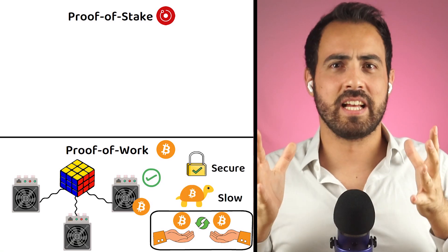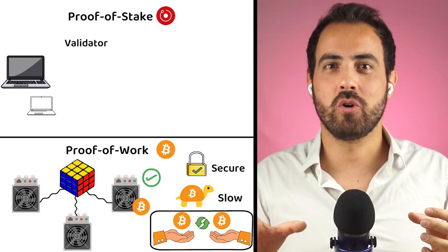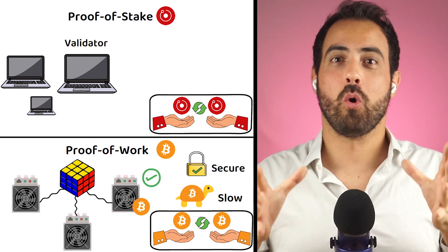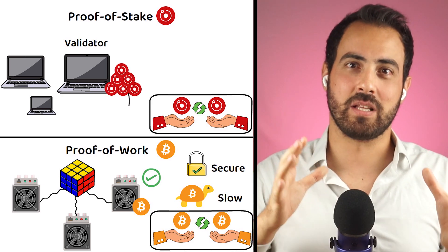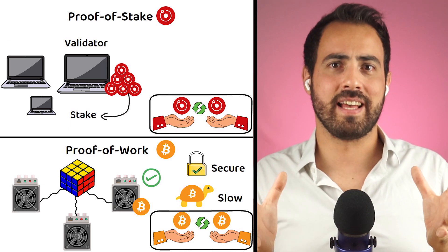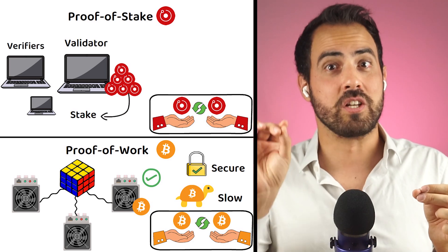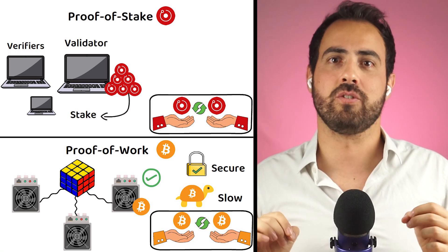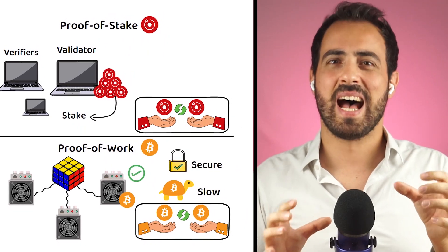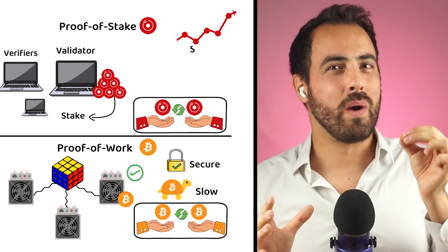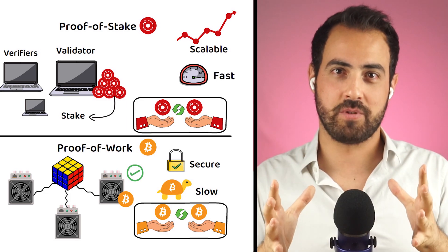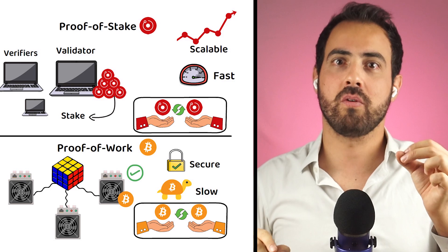Proof-of-stake networks, on the other hand, select validators semi-randomly to verify transactions based on how much they have staked — meaning deposited — to the network. It then semi-randomly selects a few verifiers to ensure the accuracy of the validator. The consequences are that proof-of-stake projects are much more scalable, quicker to confirm transactions, and result in a fraction of the energy consumption when compared with proof-of-work.